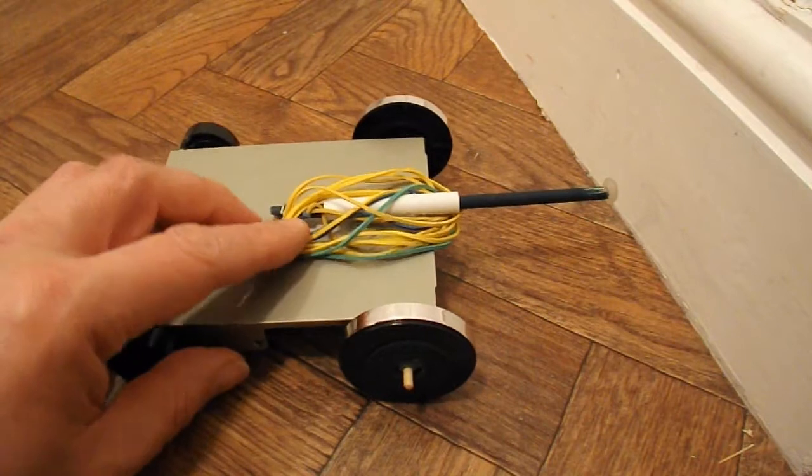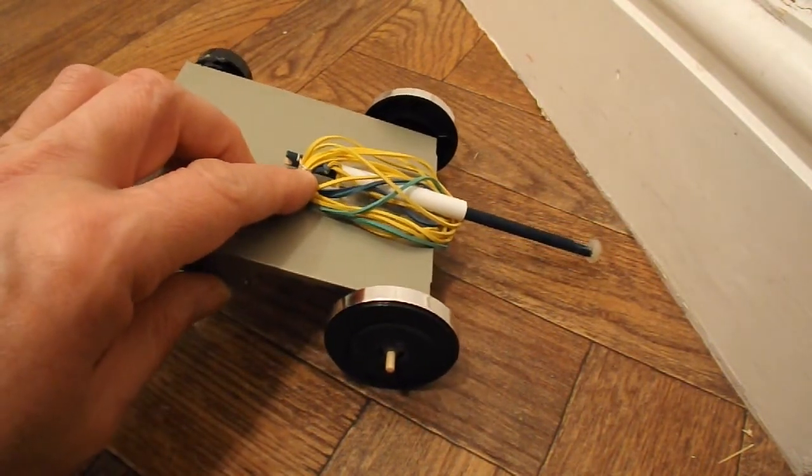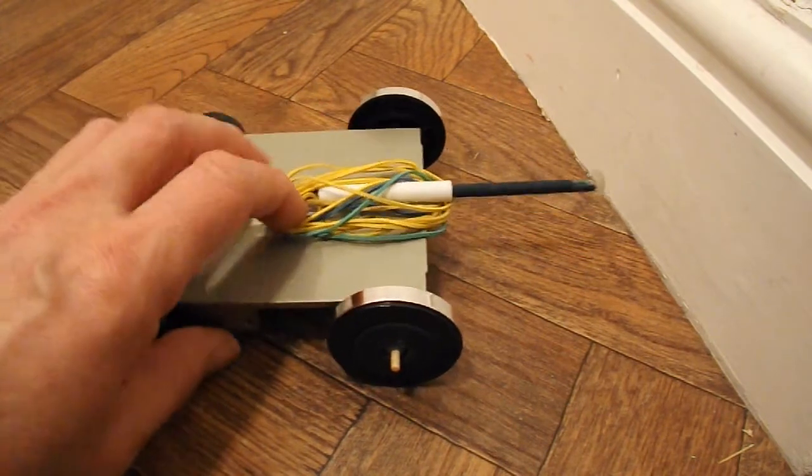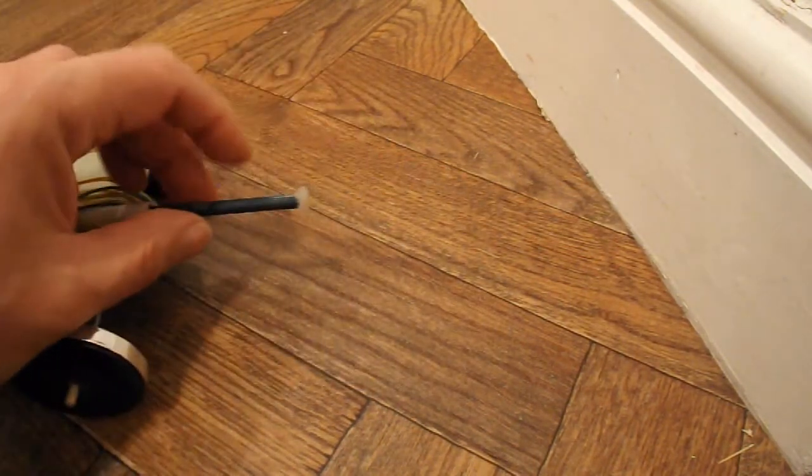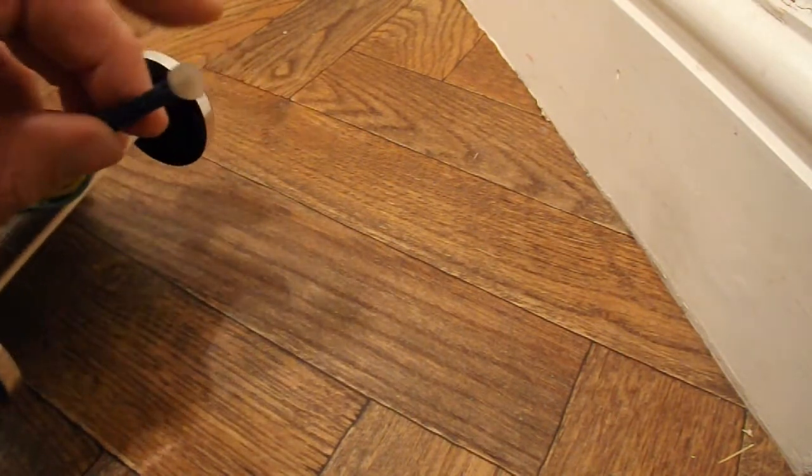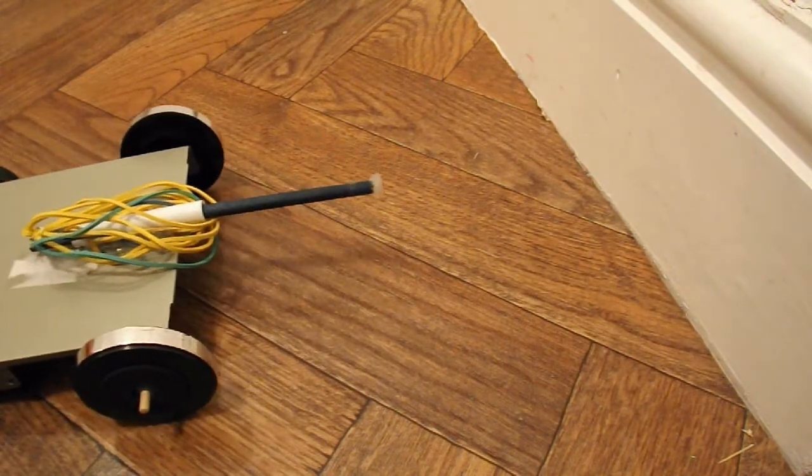Front of the push rod's got a bent paper clip around it to hook onto the rubber bands. There's a bit of hot glue on the back to give us a soft button to push against. And that's it.